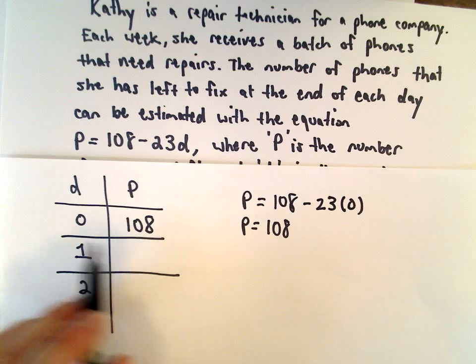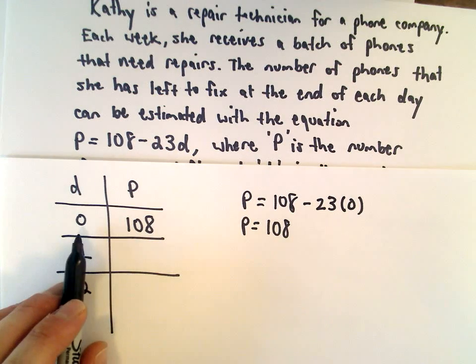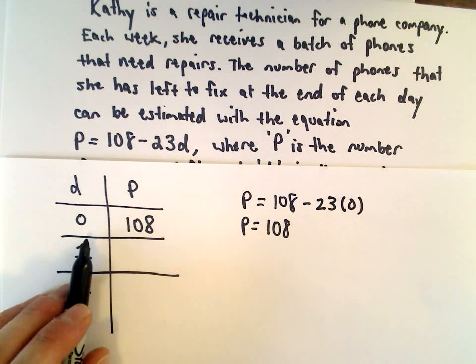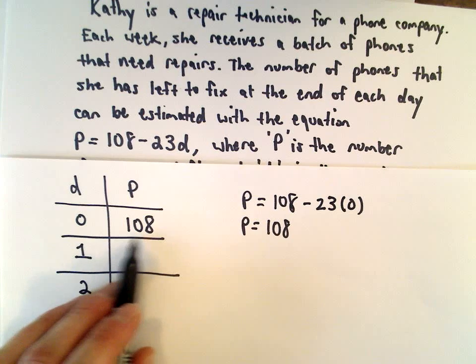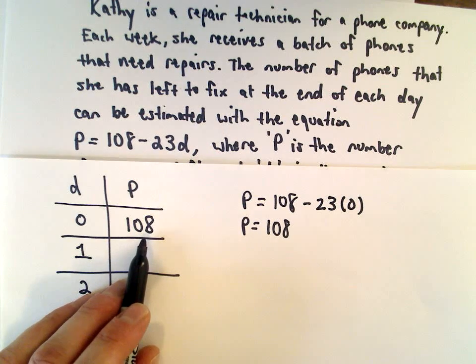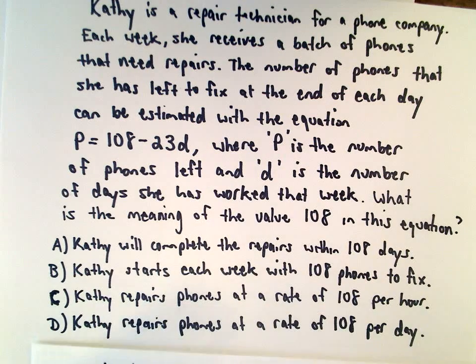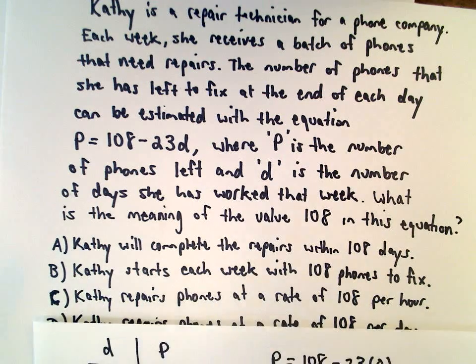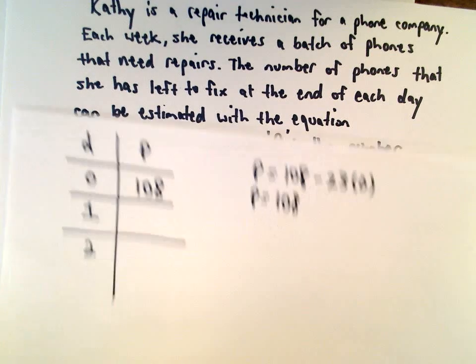To me, it suggests maybe it's just the instant she walks into work or maybe she took a sick day, for example. It says there's 108 phones still sitting there because she hasn't worked at all. So, it sounds like there's 108 phones that she has to fix each week. So, I would definitely say answer choice B.